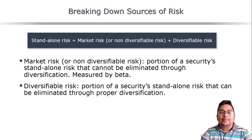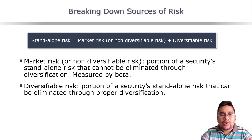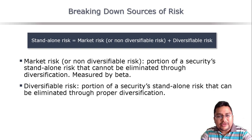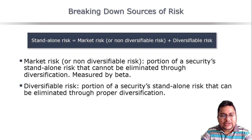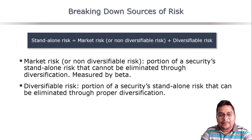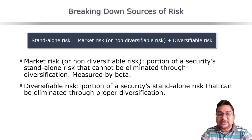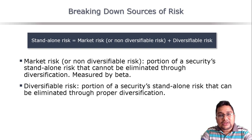We know that there are two types of risks associated with a particular investment. One is the market risk, also called non-diversifiable risk or systematic risk. The other is the diversifiable risk, also called unsystematic risk or idiosyncratic risk. Different people call these two types of risks by different names.